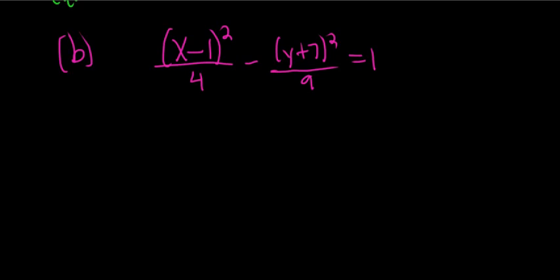So this time the center of the hyperbola is a bit different. It's 1 negative 7. But we should not let that derail us, right? So what we'll do is, again, we want to make this first piece just a cosh t squared. So we'll take this x minus 1, and we'll set that to 2 cosh t. So when we square this, we get 4 cosh squared, so the 4 is cancelled.